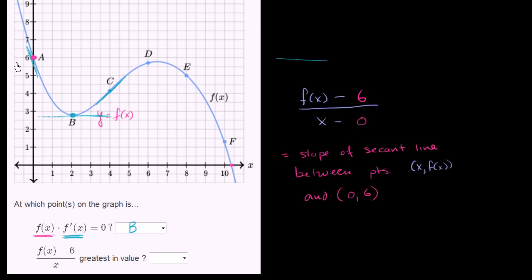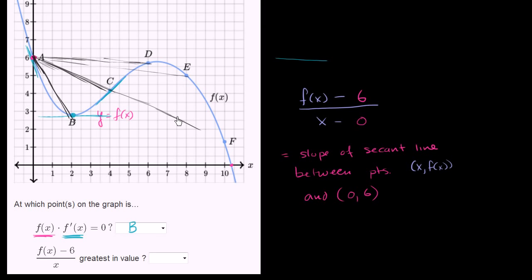Let's draw this out and go through each point. Between A and B, you have a fairly negative slope. Between A and C, it's less negative. Between A and D, it's even less negative — still negative, but less so. Then between A and E, it becomes more negative again, and between A and F, it becomes even more negative. So when is the slope of the secant line between one of these points and A the greatest — or least negative, since they're always negative? It would be between point D and A.